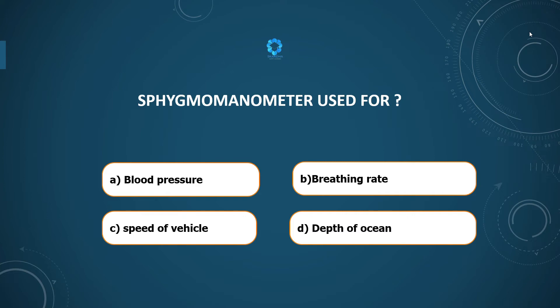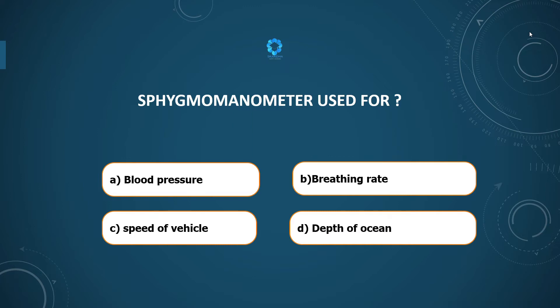A sphygmomanometer is used for measuring what? Blood pressure, breathing rate, speed of a vehicle, or depth of oceans? The answer is blood pressure.